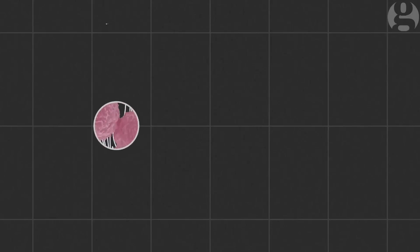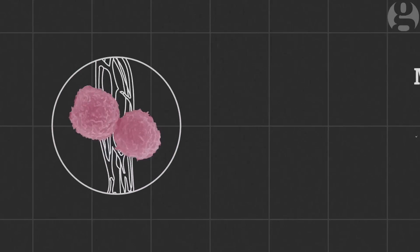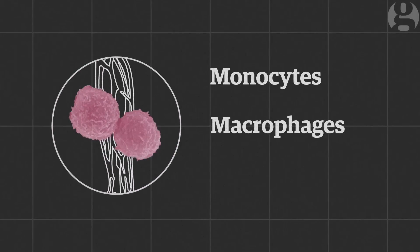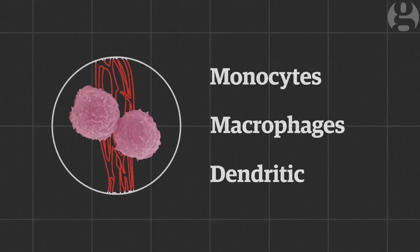Once inside, the virus quickly infects immune cells in the body known as monocytes, macrophages and dendritic cells. These spread the infection around the body through the bloodstream and probably the lymphatic system as well.